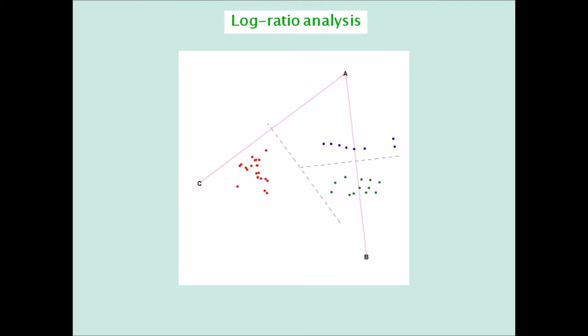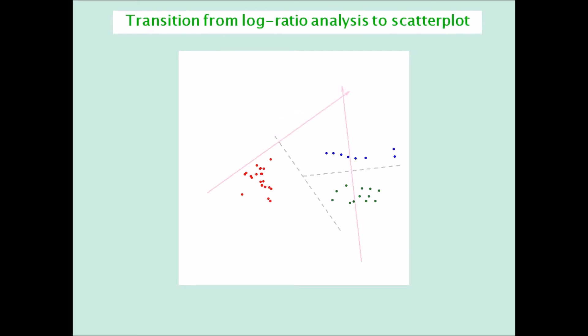And the transition from the log ratio biplot to the scatter plot, showing how the two biplot axes become the axes of the scatter plot. That is the original scatter plot.